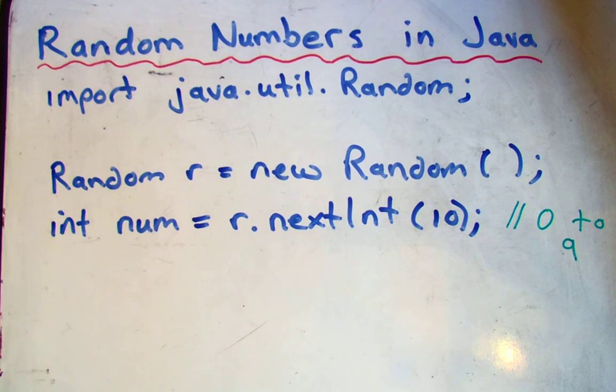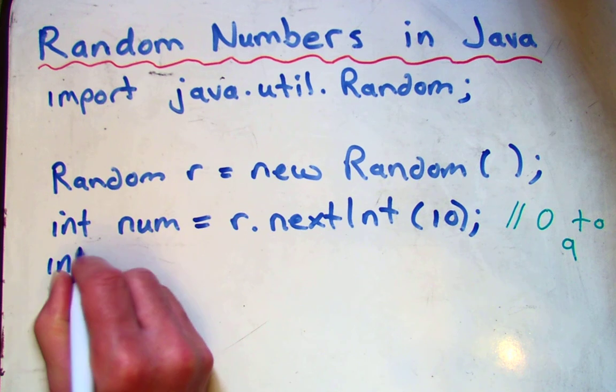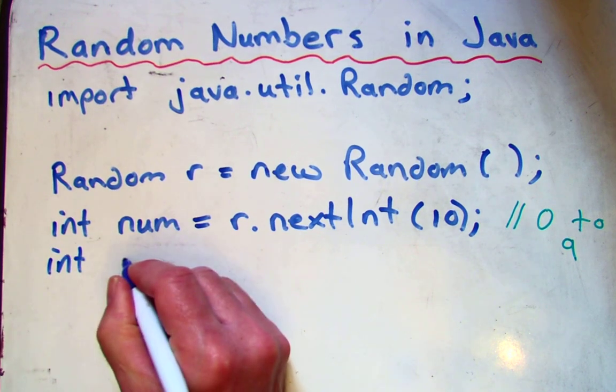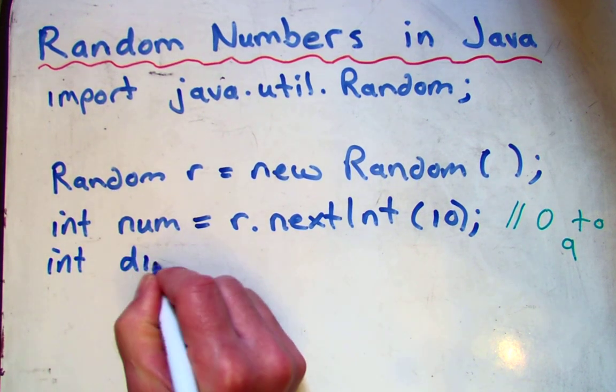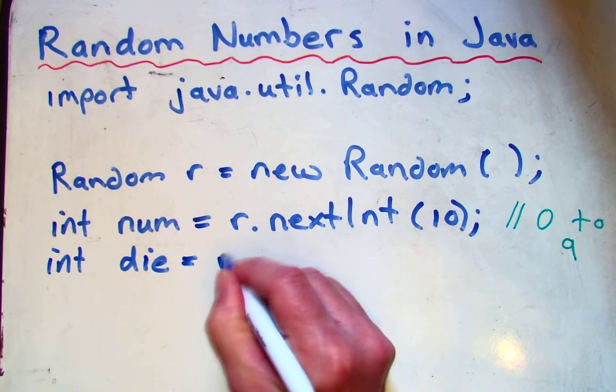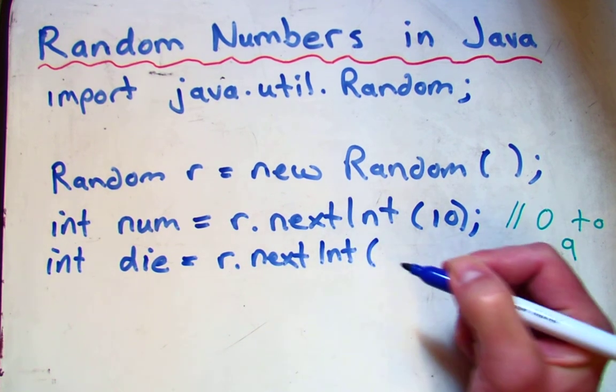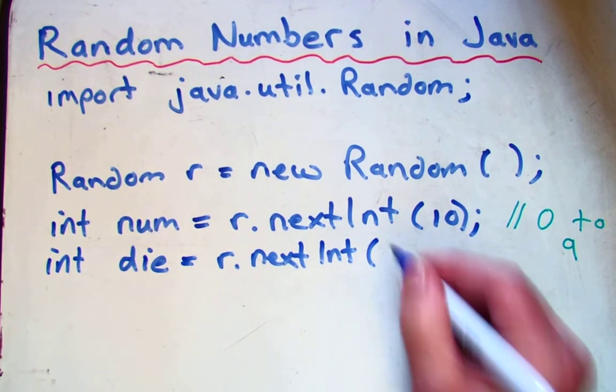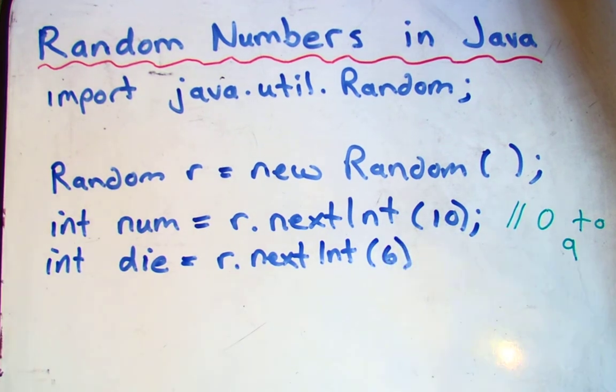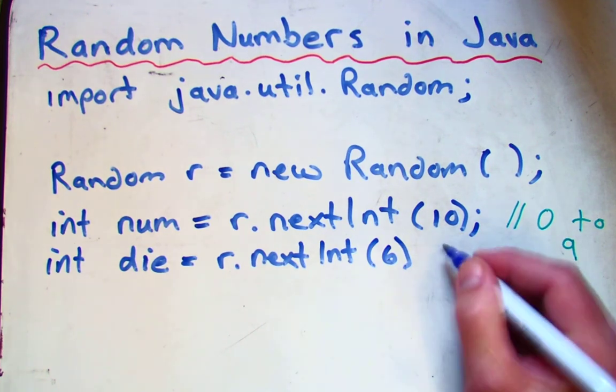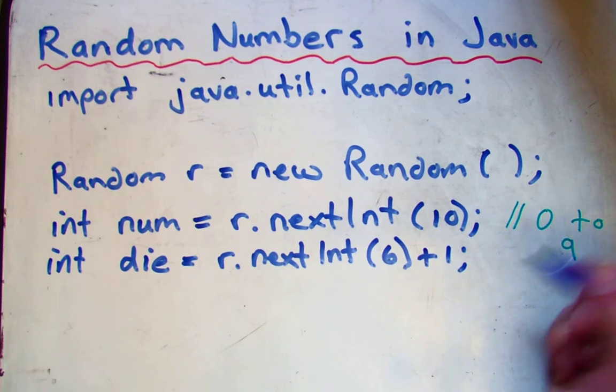So the next thing I might want to do is maybe I want to make the range not start at 0. So, maybe I want to make an integer that represents rolling a die from 1 to 6. So, if I say nextInt, and there's actually 6 numbers, so I do want to put a 6 in here, but that would give me the numbers from 0 to 5. So in order to go 1 to 6, I would just add 1 onto the end of it.